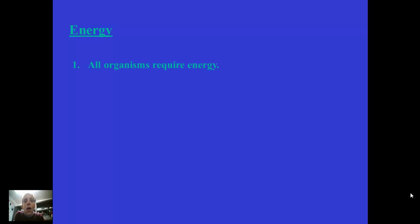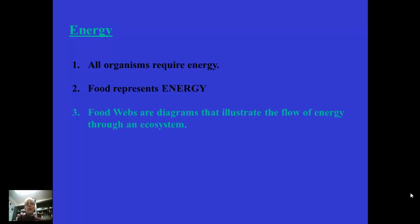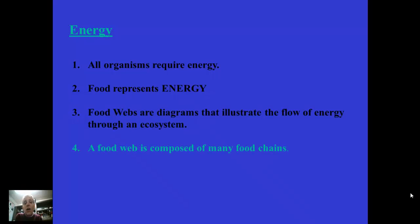So where does all of the energy in our ecosystem come from? All organisms require energy in order to survive — it's one of the five characteristics of life. Food represents that energy, so the currency of any ecosystem is food. Food webs are diagrams that illustrate the flow of energy through an ecosystem. A food web is composed of many food chains. A food chain is very linear — energy moving from one organism to the next — while a food web is much more dynamic.